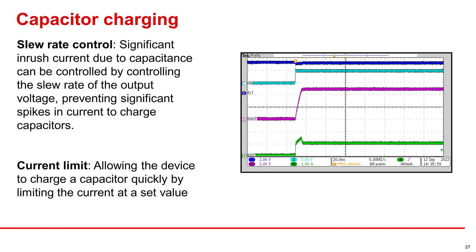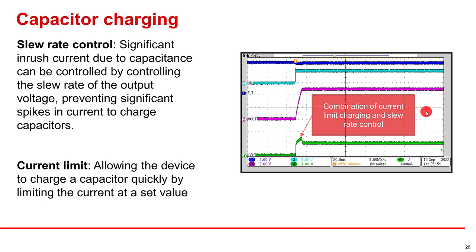With a device with just slew rate control, it would not prevent the current from spiking. But by having a current limited device, it will prevent the current from spiking for significant durations by regulating the current. The image on the right hand side is a combination of slew rate control and current limit charging output capacitance on our TPS 22950 device.